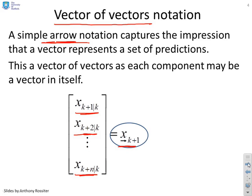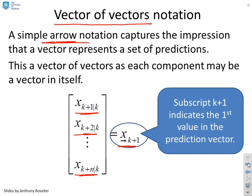Now the nice thing about the arrow notation is it doesn't tell you what n is, so you can be fairly flexible. It can go up to whatever n you like. So the subscript k plus 1 indicates the first value, that's this one here, but actually we don't say what the last value is, we leave that as implicit in the context.